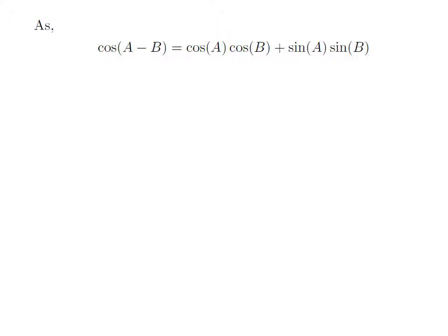As we know, the trigonometry identity cosine of a minus b is equal to cosine of a into cosine of b plus sine of a into sine of b.